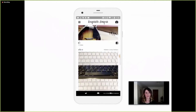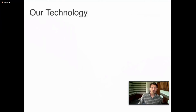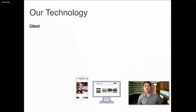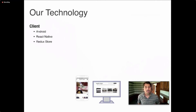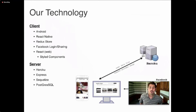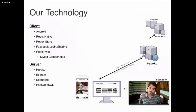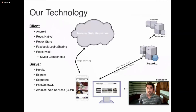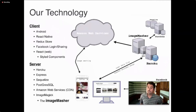We built two client-side applications. For mobile, we built with Android using React Native and a Redux store. We integrated with Facebook for login and sharing. For the web, we built in React our gallery specifically using styled components. For the server, we deployed with Heroku, with an Express server with SQLite helping us model our Postgres database. Amazon Web Services was set up for our content delivery network.